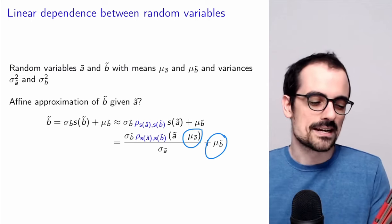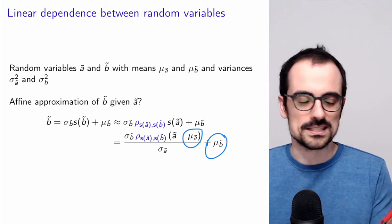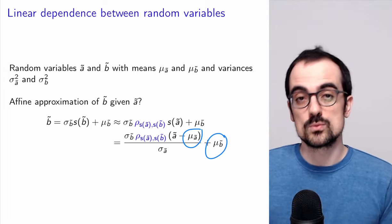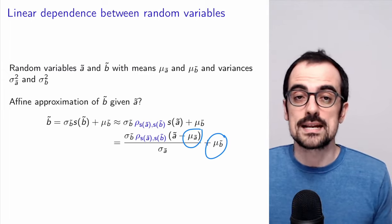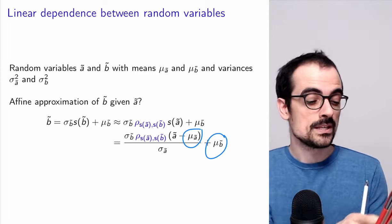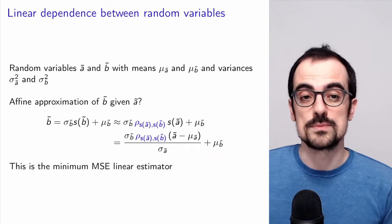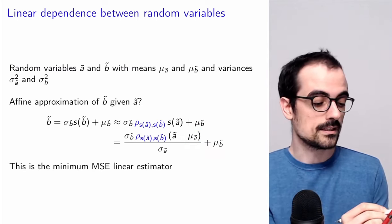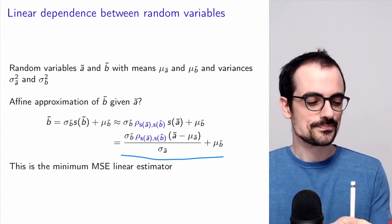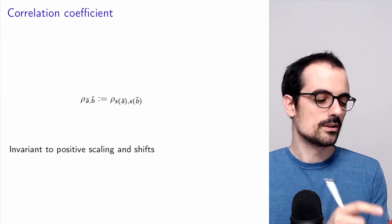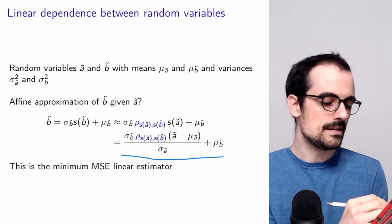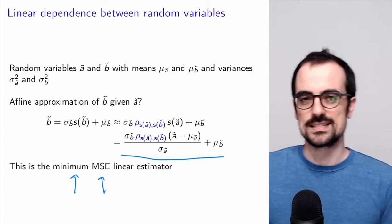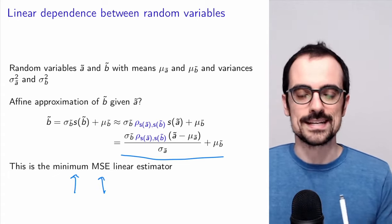This detail that the estimator is affine rather than strictly linear is of mathematical interest, but it doesn't really matter in practice. People often refer to this as the best linear estimator. We have found an affine approximation of B given A, and it turns out this is optimal from the mean squared error point of view — you cannot do better. So we call this the linear minimum MSE estimator of B given A.